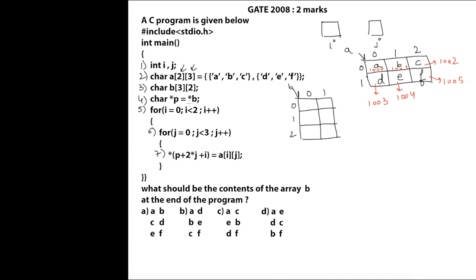In line number 4 we have: char *P = B. There should be no star before B — it is simply char *P = B. That means pointer P is now pointing to the location pointed by B. Suppose this location is 2000, so B stores 2000. Since it is a character array, subsequent locations are 2001, 2002, 2003, 2004, 2005 (using row-major order). So P is now storing 2000.